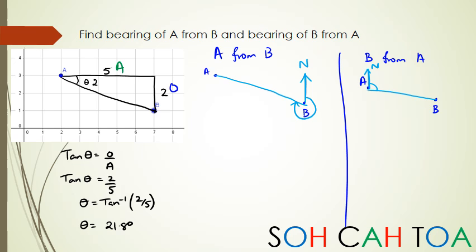So this angle here is 21.8 degrees. Now because of parallel lines I could also probably do it something like this, where I could say alternate angles are equal in parallel lines, so I could also say that this angle here is 21.8 degrees, which means to find the bearing of A from B...